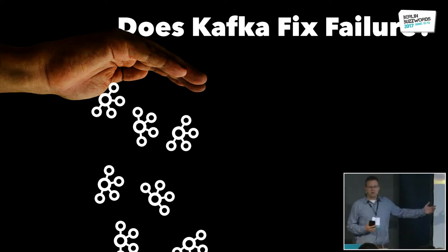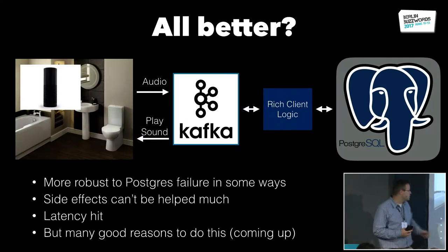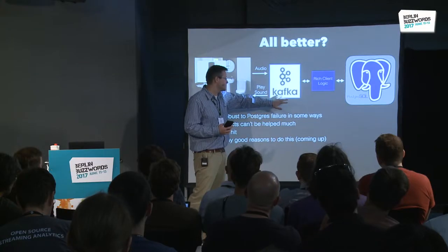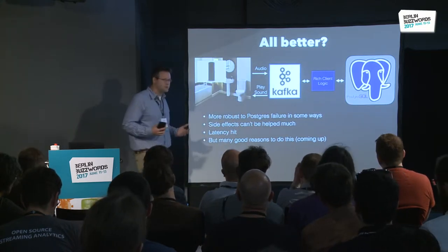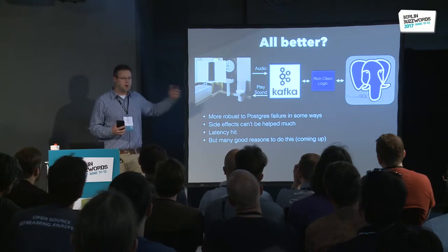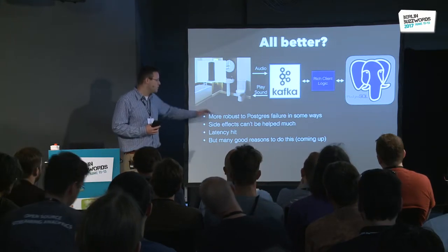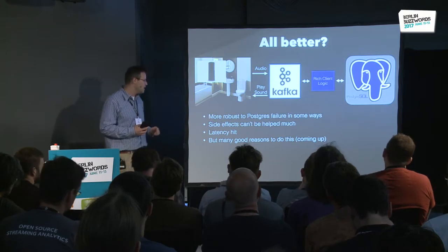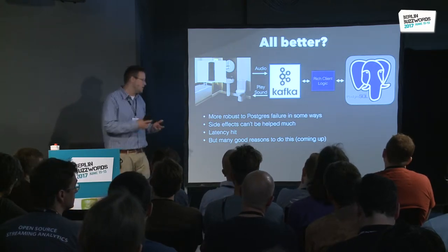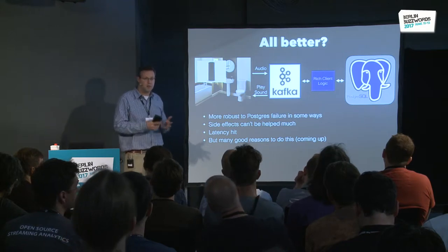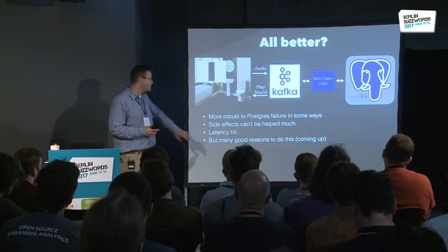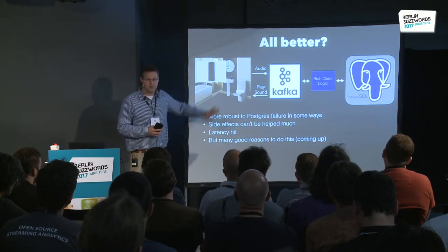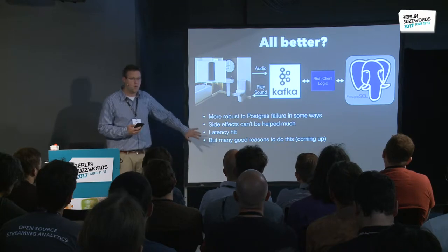So can I just sprinkle some Kafka on this and make these problems go away? In the Postgres example — and it looks similar for Storm — I can put Kafka in front. In terms of how this helps failure, it does get me some better back pressure and some robustness. But it doesn't fundamentally change things. It doesn't fundamentally change how I handle side effects or what happens when Postgres goes down for an extended period. I've got a slide coming up on why you would do this.